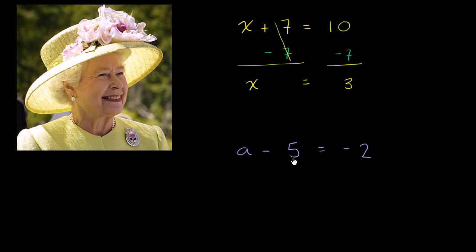So we have to get rid of this negative 5 somehow. Well, the best way of getting rid of a negative 5 is to add 5 to it. So I will add 5 to the left-hand side.